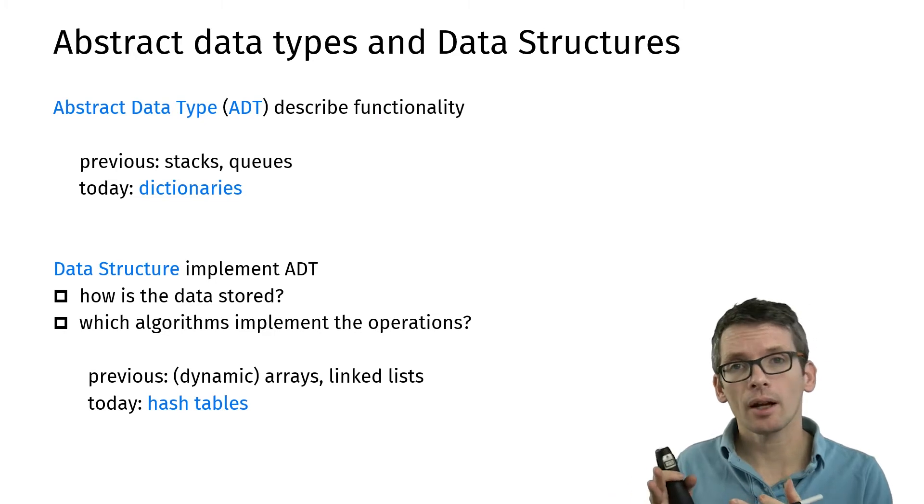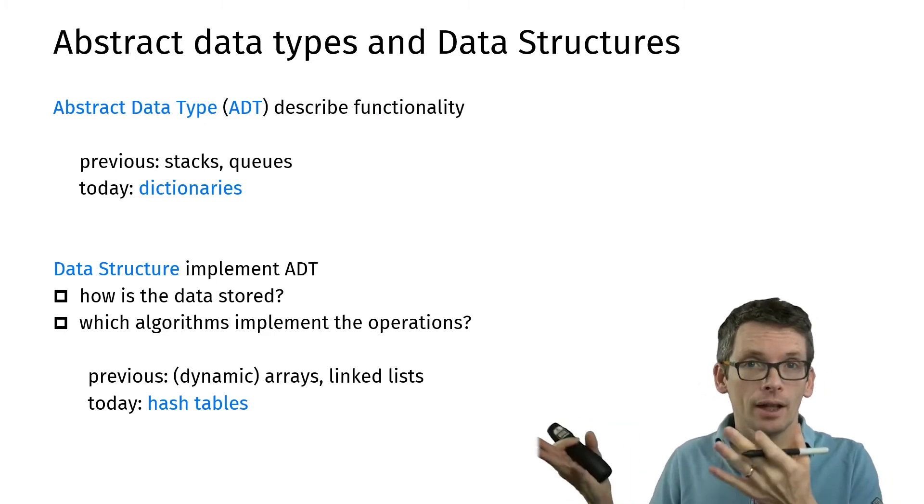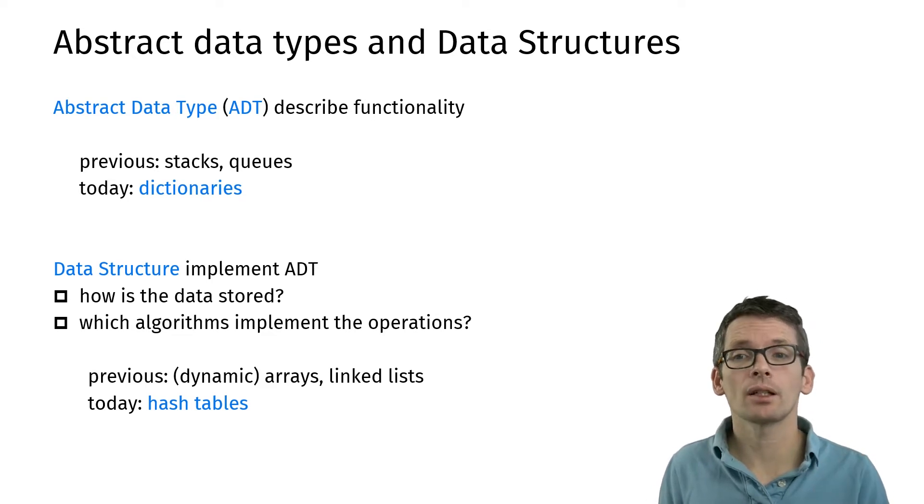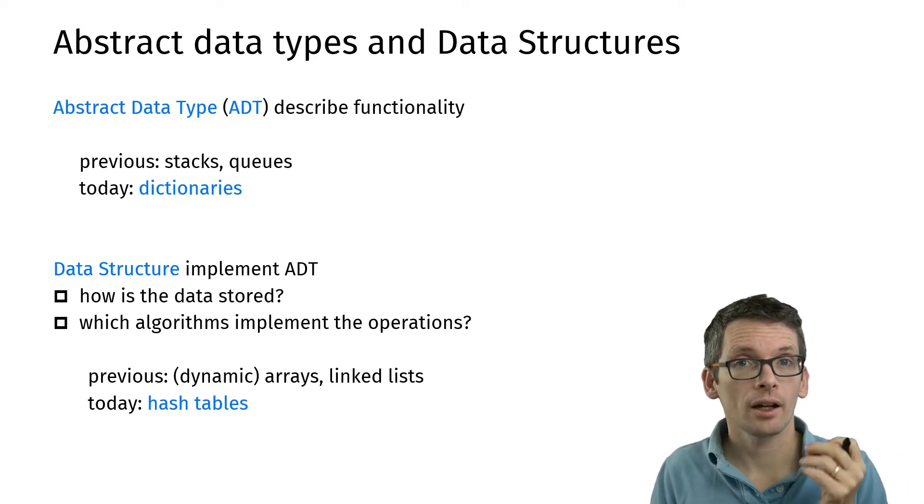Examples of abstract data types are stacks, queues, priority queues, and as we're going to see today, dictionaries. Examples of data structures are linked lists, arrays, and today, hash tables.